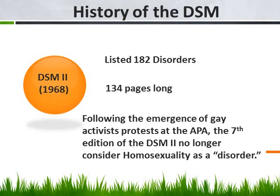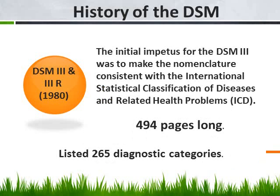The DSM-2 came in 1968 and was 134 pages long, listing 182 mental disorders. This was the famous edition where there were a lot of protests by a gay lobby group, and as a result the homosexual terminology was taken out of the book — no longer was homosexuality considered to be a disorder.